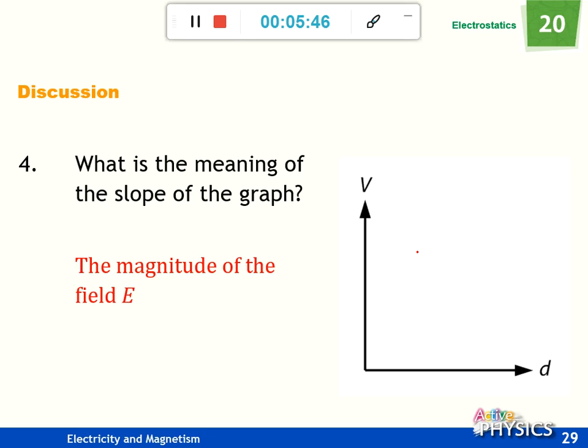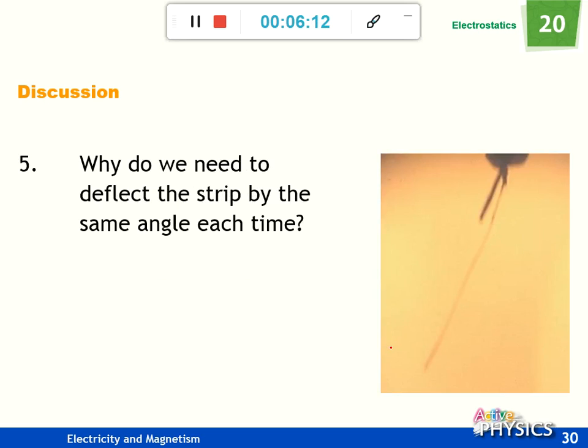Question 4: What is the meaning of the slope of the graph? The V-D graph slope will be the value of the field E. Based on this equation, E is defined as V over D. So V is the Y axis, D is the X axis. The Y axis value over X axis value is the definition of the slope.